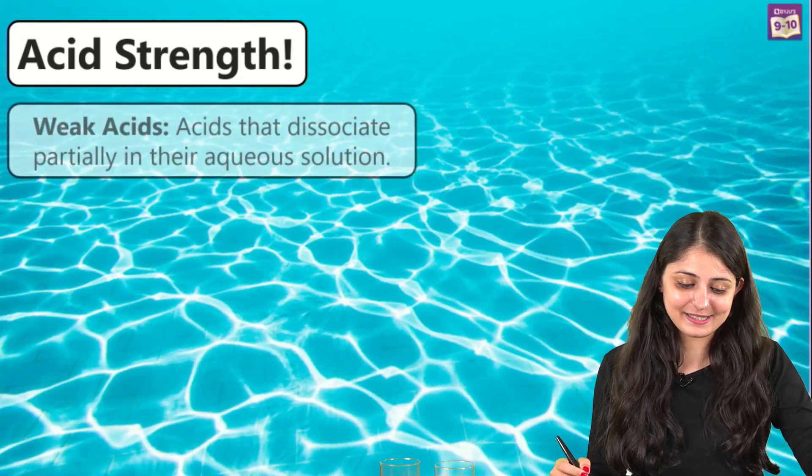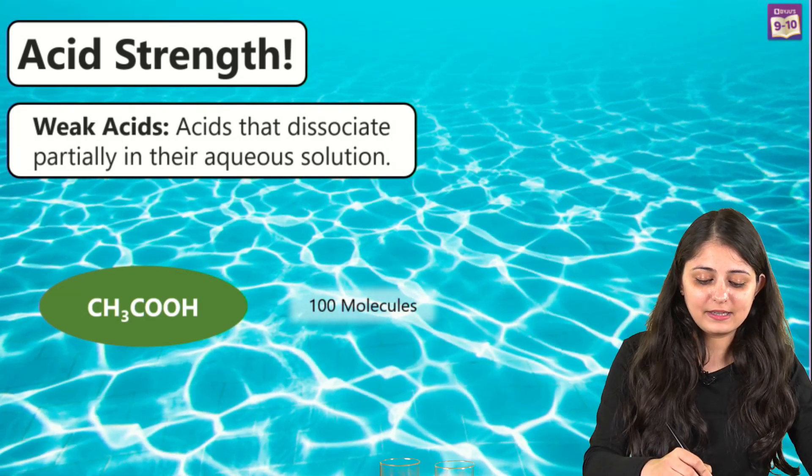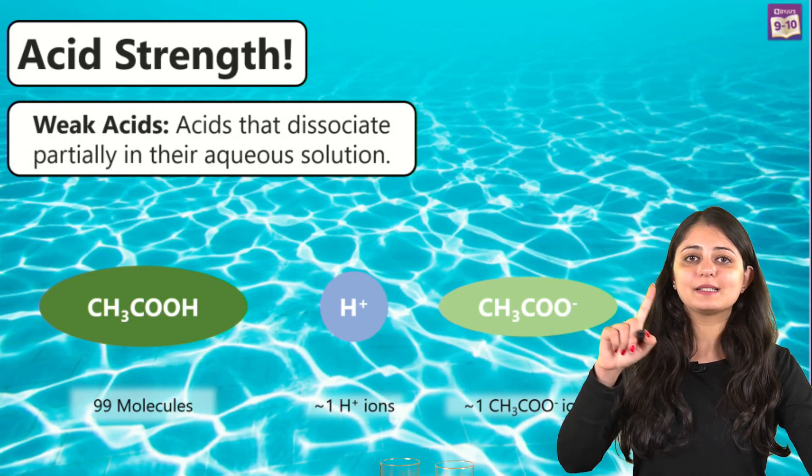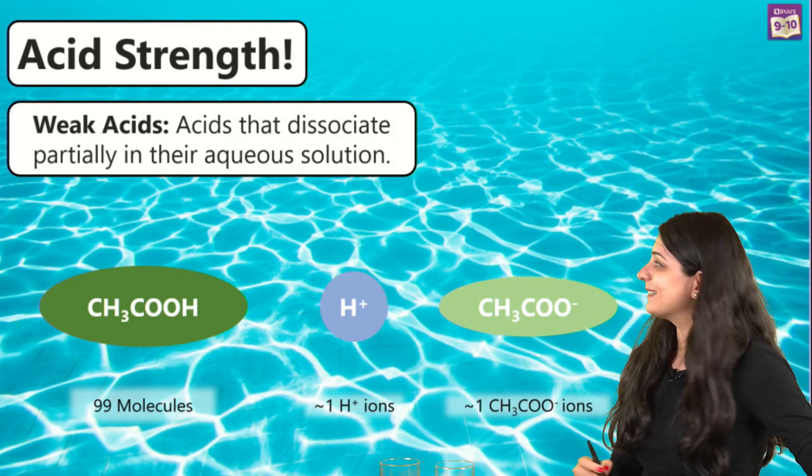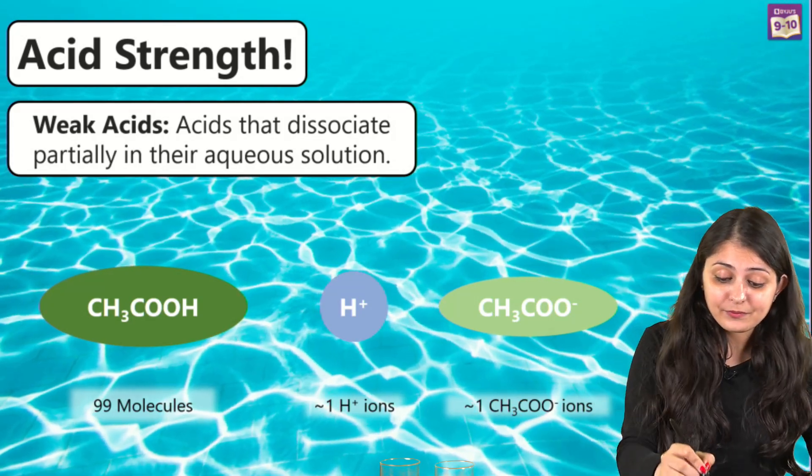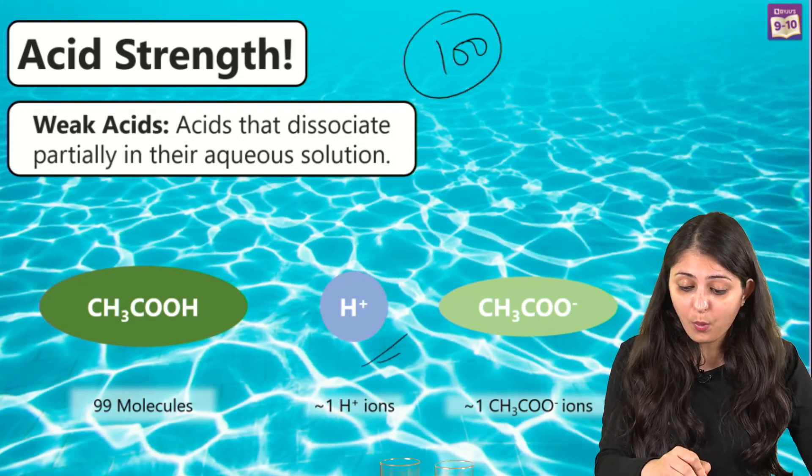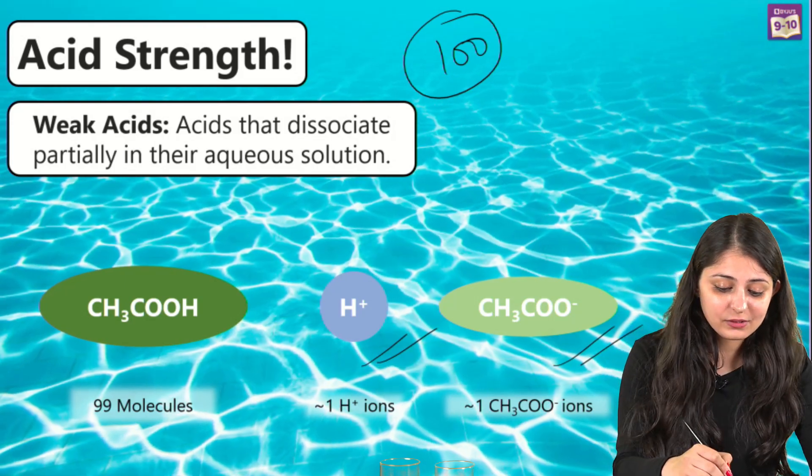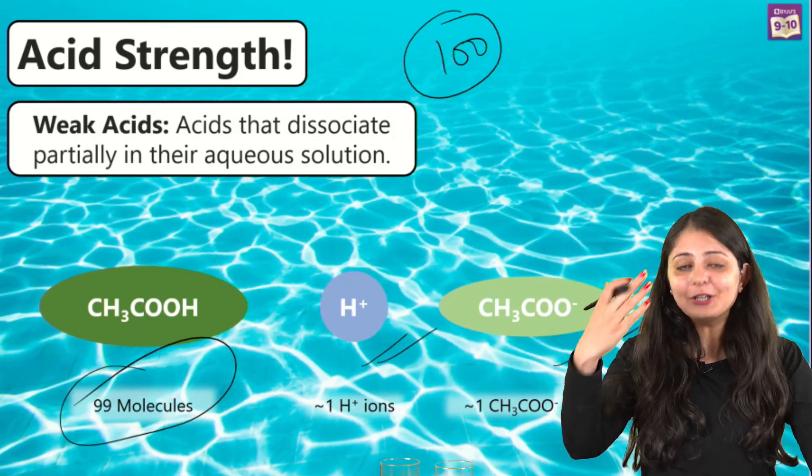Now let's see what's the case with acetic acid. Again in this case we are going to take the same number of molecules, so let's say we have 100 molecules being added to water. Again it's going to break into H+ and acetate ions, and ideally we should get 100 H+ ions, isn't it? But this is not happening. The reality is completely different. Instead, for 100 molecules of the acid, we are actually getting just one H+ ion, just one acetate ion, and the rest of the molecules remain as is.